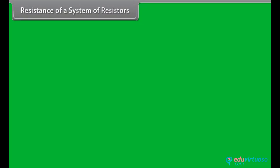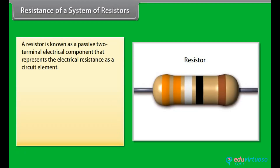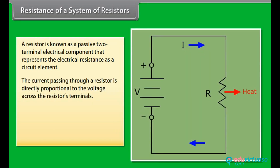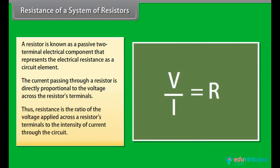A resistor is a passive two-terminal electrical component that represents electrical resistance as a circuit element. The current passing through a resistor is directly proportional to the voltage across the resistor's terminals. Thus, resistance is the ratio of the voltage applied across a resistor's terminals to the intensity of current through the circuit.